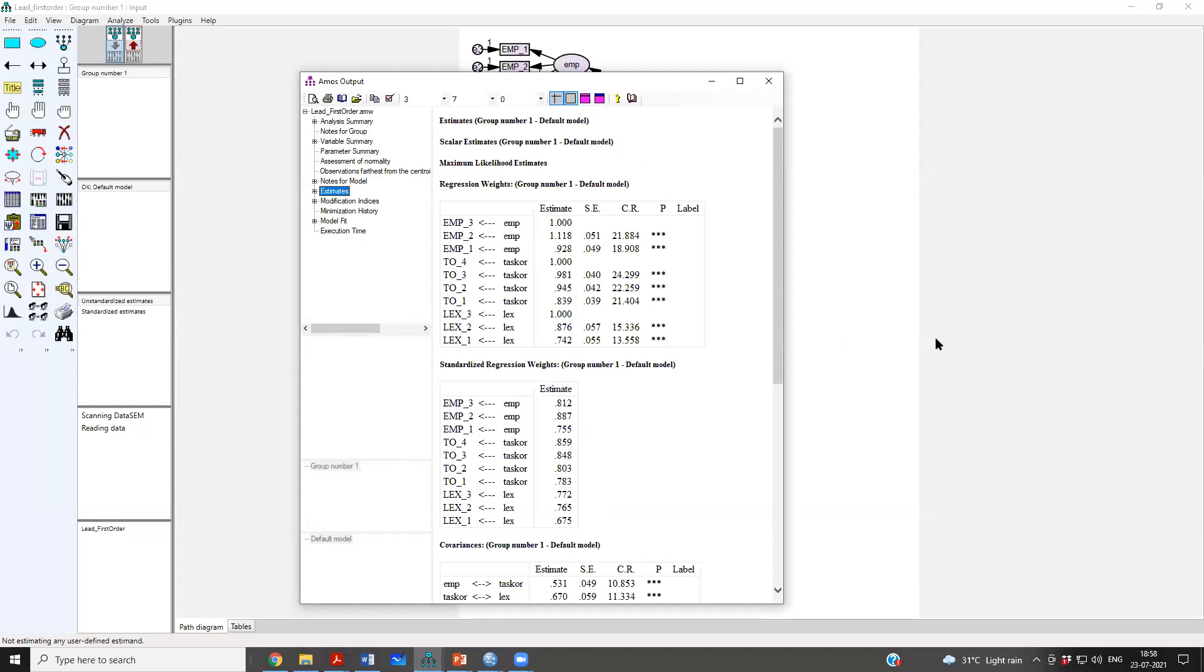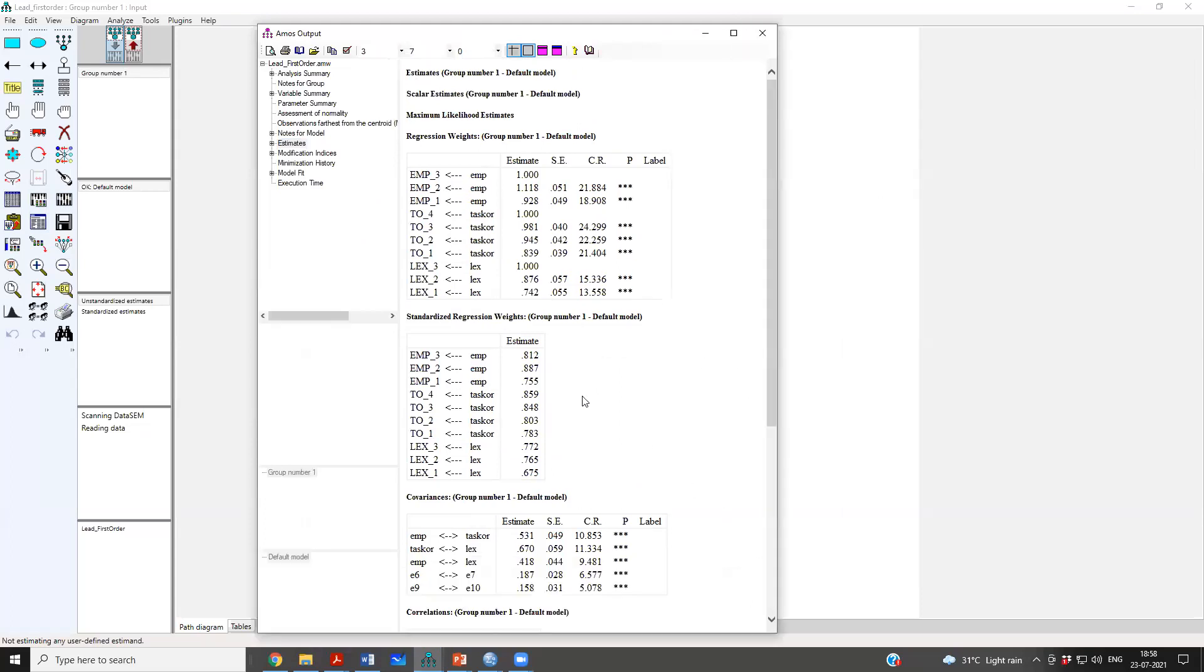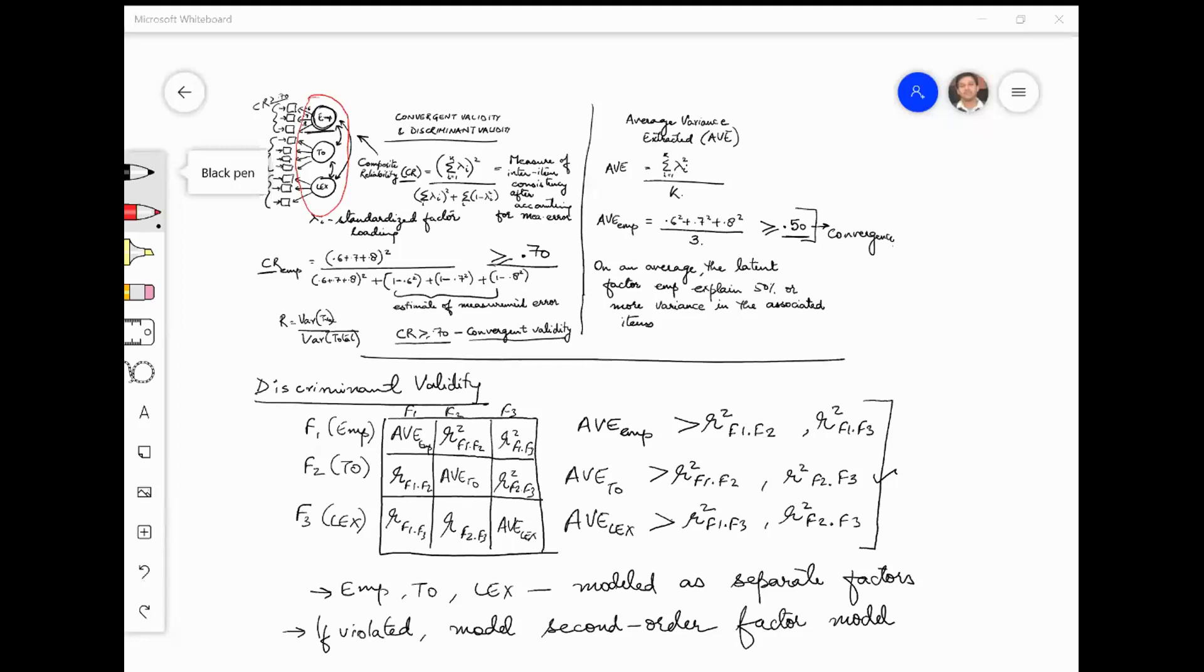Kishore, my question is basically convergence means within the construct, and discriminant is between. In the previous diagram, you mentioned that in discriminant, is there a possibility that AVE, in one of these constructs is less than R square? Out of the 3, only one is less. Yeah, it is possible. Then you are saying that your factor is not discriminant. Correct.